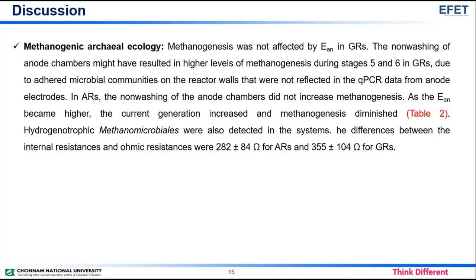Methanogenic archaeoecology: Methanogenesis was not affected by anode potential in glucose-fed reactors. The non-washing of anode chambers might have resulted in higher levels of methanogenesis during stages 5 and 6 in glucose-fed reactors, due to adhered microbial communities on the reactor walls not reflected in the QPCR data from anode electrodes. In acetate-fed reactors, non-washing of the anode chambers did not increase methanogenesis. As the anode potential became higher, current generation increased and methanogenesis diminished, as shown in Table 2. Hydrogenotrophic Methanomicrobiales were also detected in the systems. The differences between the internal resistances and ohmic resistances were 282 ± 84 ohms for acetate-fed reactors and 355 ± 104 ohms for glucose-fed reactors.